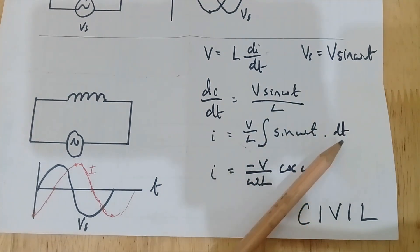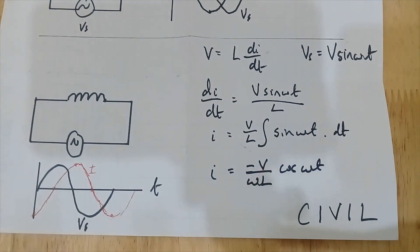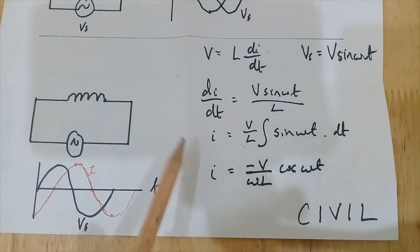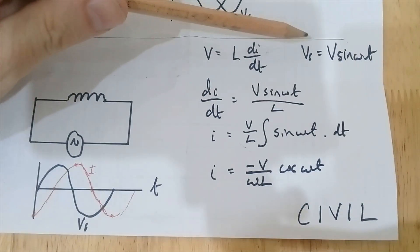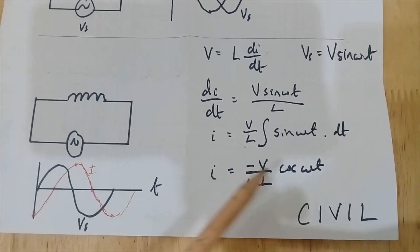Now I can integrate both sides and I end up with the current equals, well V and L are constant so I'll bring that out of the integration, and I'll have the integral of sin(ωt) with respect to t. That's a mathematical trick you can do if you've done year 12 or 13 mathematics—integration is the opposite, you can undifferentiate something by integrating it. That will give us the current.